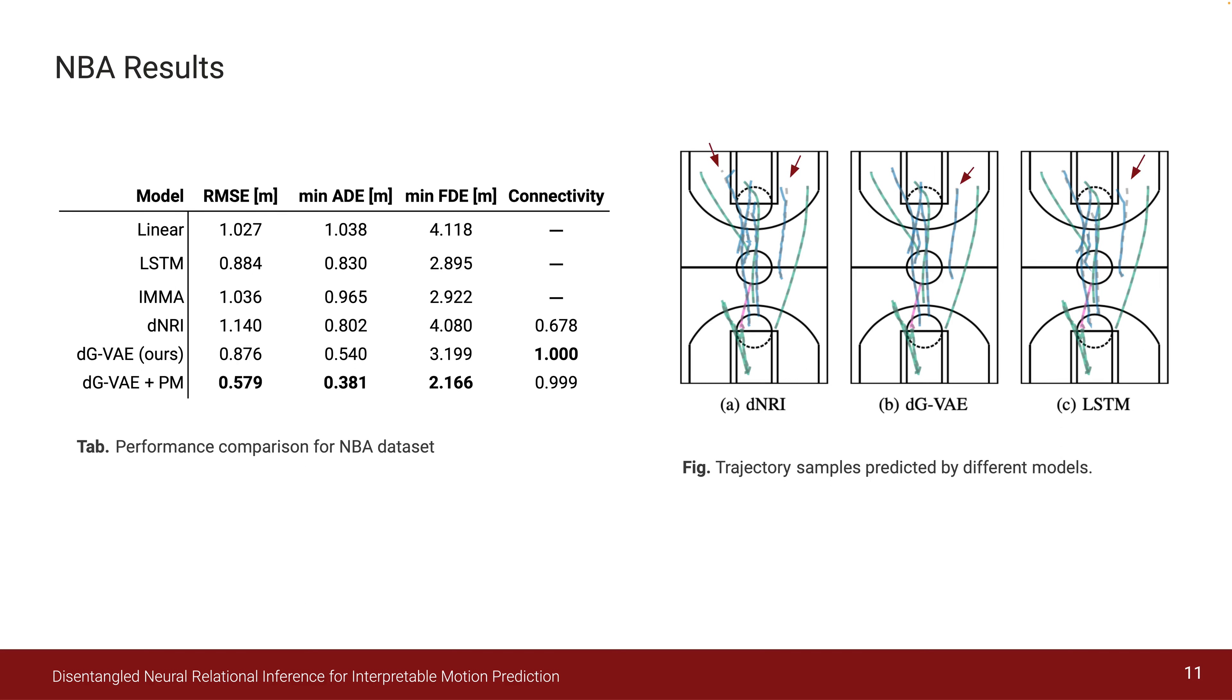The gray dashed lines represent ground truth trajectories, and the blue and green lines show the predictions for home and visiting teams respectively. The purple lines represent the basketball. Our approach demonstrates a smaller deviation from the ground truth trajectories compared to DNRI and LSTM.